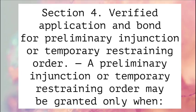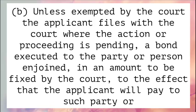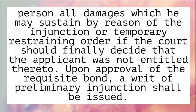Section 4. Verified Application and Bond for Preliminary Injunction or Temporary Restraining Order. A preliminary injunction or temporary restraining order may be granted only when: a. The application in the action or proceeding is verified, and shows facts entitling the applicant to the relief demanded; and b. Unless exempted by the court, the applicant files with the court a bond executed to the party or person enjoined, in an amount to be fixed by the court, to the effect that the applicant will pay all damages which he may sustain by reason of the injunction or temporary restraining order if the court should finally decide that the applicant was not entitled thereto. Upon approval of the requisite bond, a writ of preliminary injunction shall be issued.